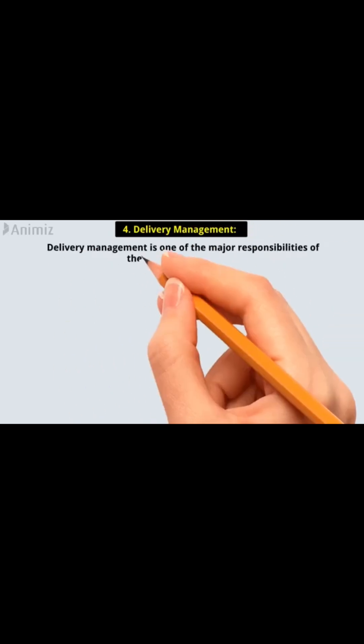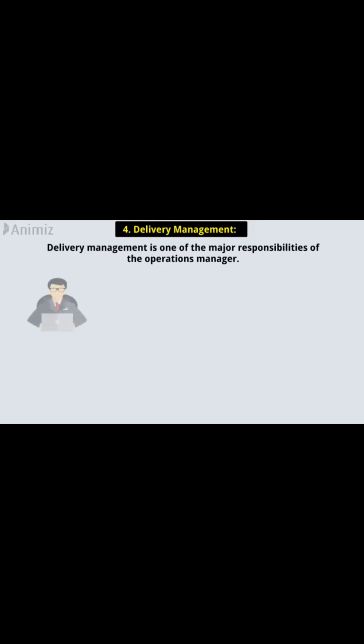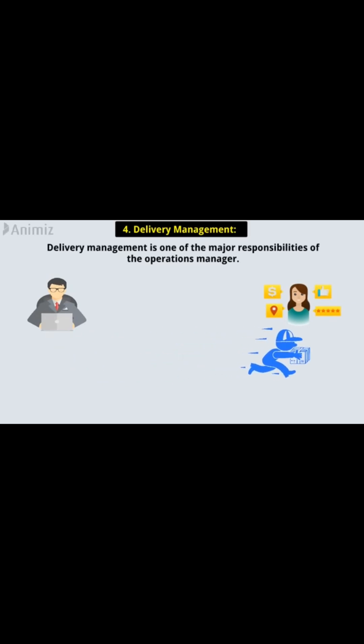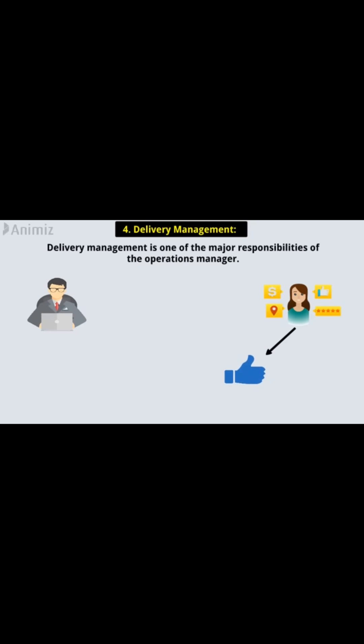4. Delivery Management. Delivery management is one of the major responsibilities of the operations manager. The manager makes sure the goods are delivered to the consumer on time. They should follow up with consumers to ensure that the products delivered are what they require and meet their needs.